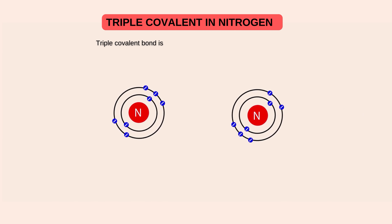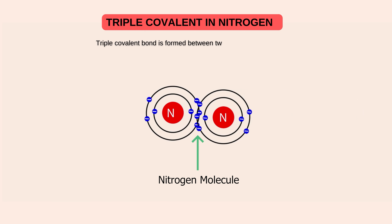Is ki example mein sabse common example humay paas nitrogen ki mojood hai. Nitrogen atom, as we all know, its atomic number is seven and it has five electrons in its valence shell. Stability achieve kerne ke liye nitrogen ko mazid tien electron ki zarurat hoti hai. Apne in tien electron ki zarurat ko mukammal kerne ke liye, nitrogen dusre nitrogen atom ke saat tien tien electron ki mutual sharing kerta hai, aur triple covalent bond bana kar nitrogen molecule mein convert ho jata hai.